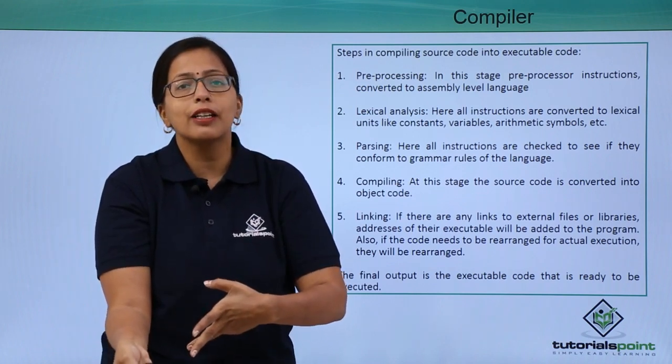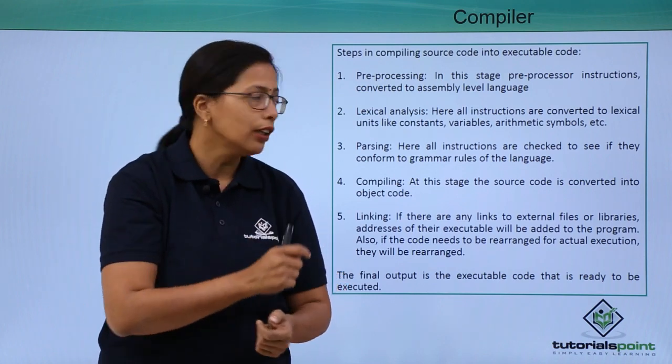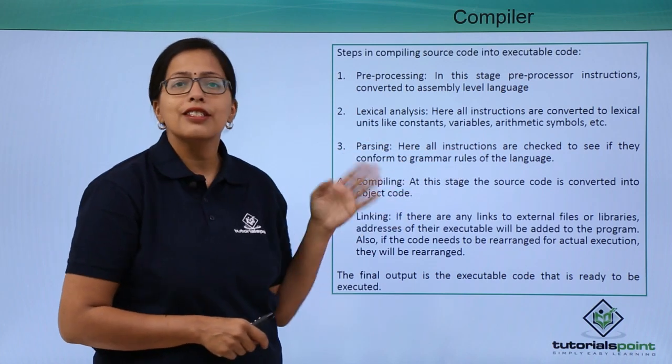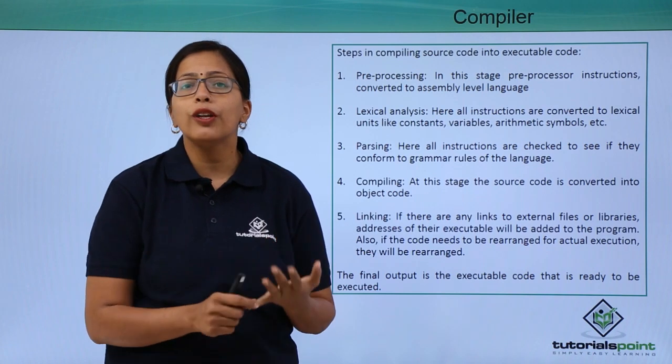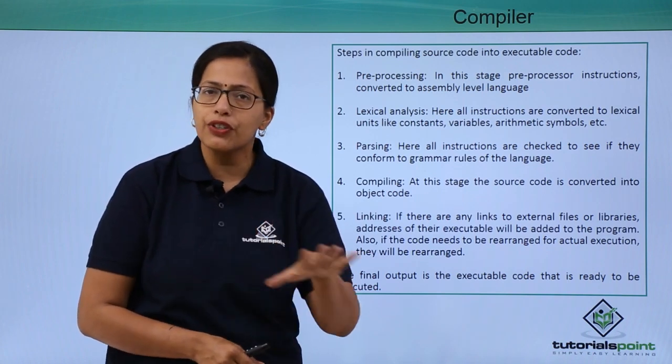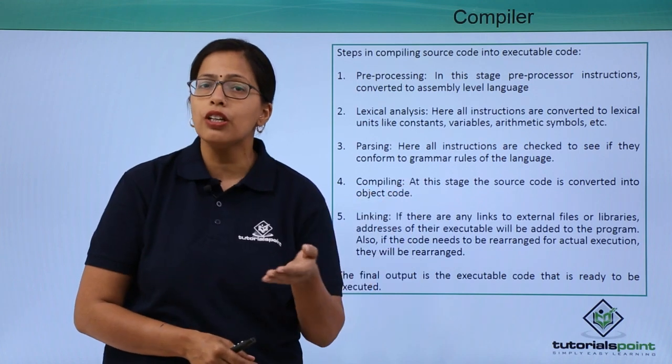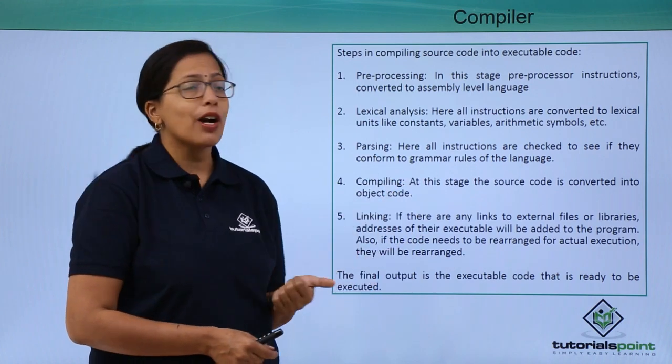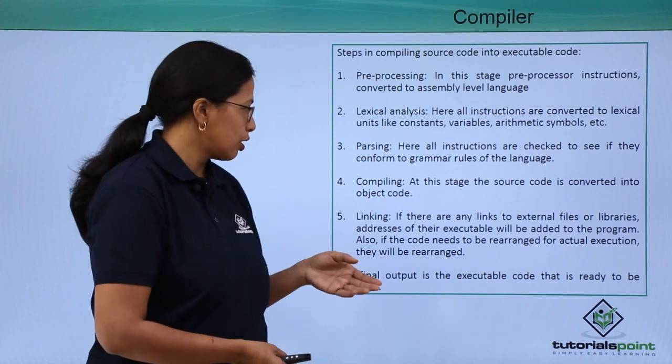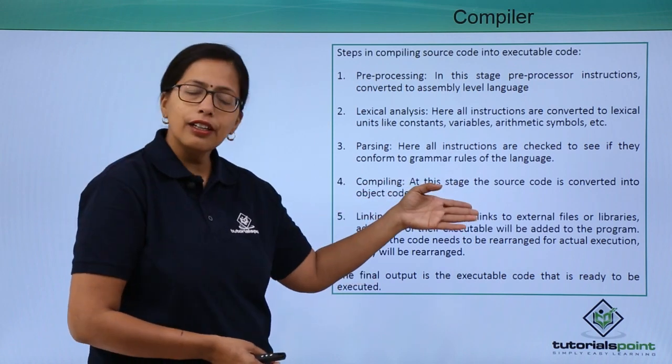Parsing: Here all instructions are checked to see if they are following the grammatical rules of the language. Every high level language will have its own rules. At parsing level, the compiler will check if it follows those rules or not. Compiling: Here the source code finally gets converted into the object code. The complete program is interpreted line by line.